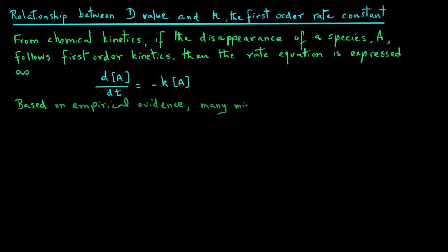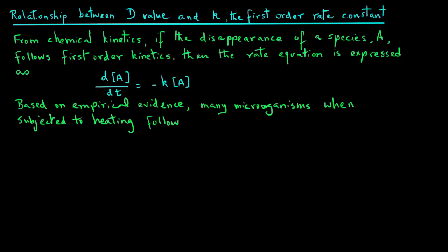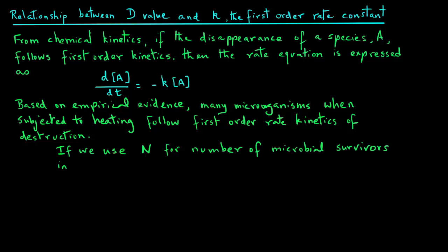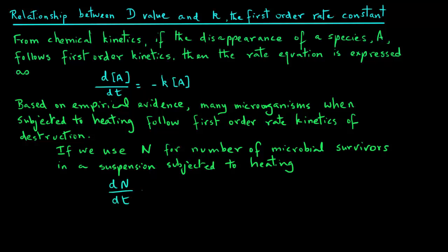Based on experimental evidence, many microorganisms, when subjected to heating, follow first-order rate kinetics of destruction. That means that instead of A, if we use N for the number of microbial survivors in a suspension subjected to heating, we can write the first-order equation as dN over dt equals minus K times N.